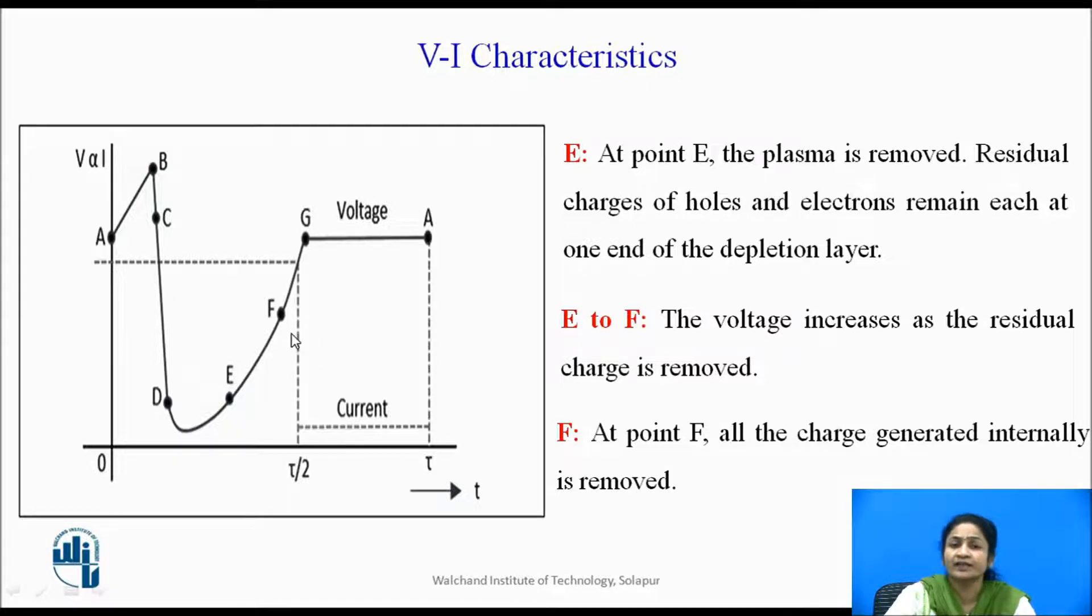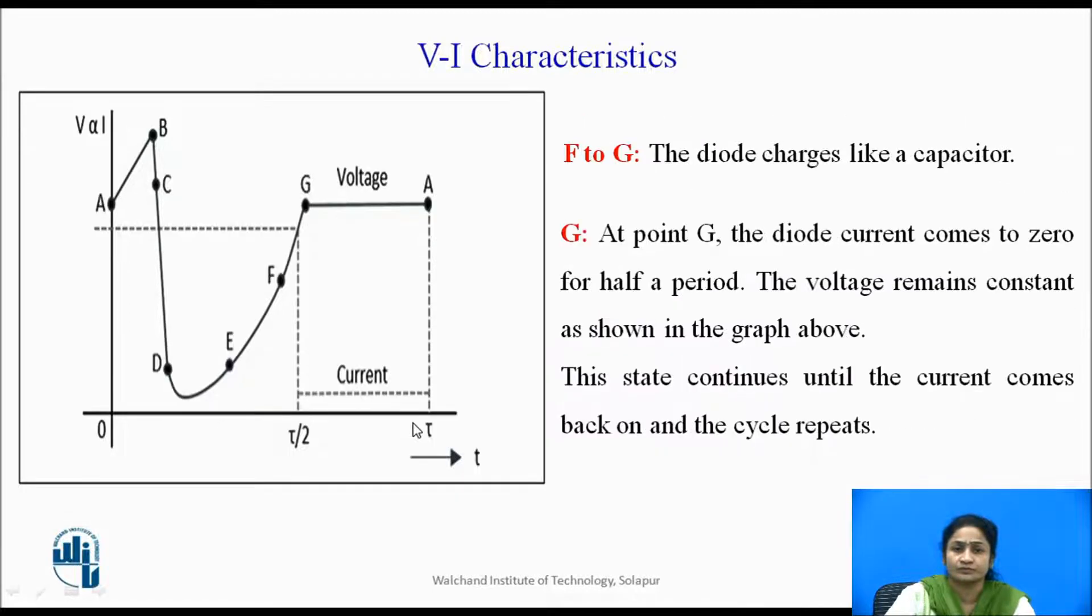At point F, all the charges generally generated internally are totally removed. But at this point F, the voltage is increasing, but the current is reaching to zero. From point F to G, the diode again starts charging like a linear capacitor. At point G, the diode current comes to zero.